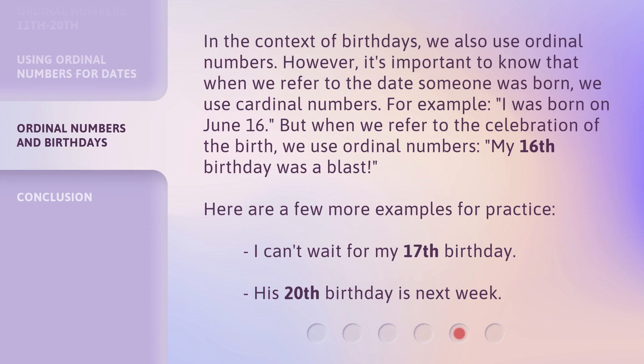In the context of birthdays, we also use ordinal numbers. However, it's important to know that when we refer to the date someone was born, we use cardinal numbers. For example, 'I was born on June 16th.' But when we refer to the celebration of the birth, we use ordinal numbers: 'My 16th birthday was a blast.' Here are a few more examples for practice: 'I can't wait for my 17th birthday.' 'His 20th birthday is next week.'